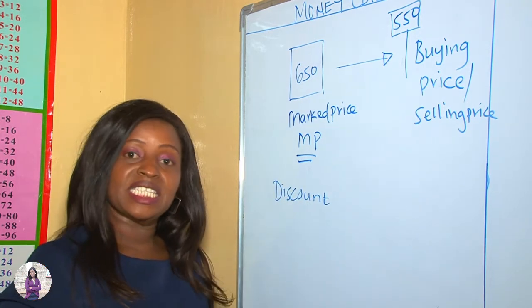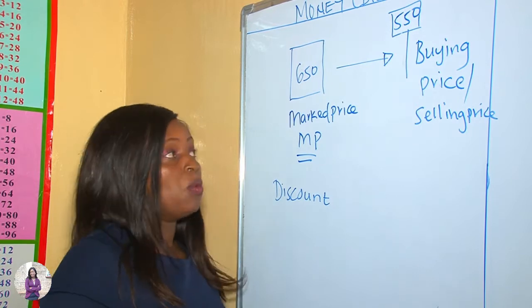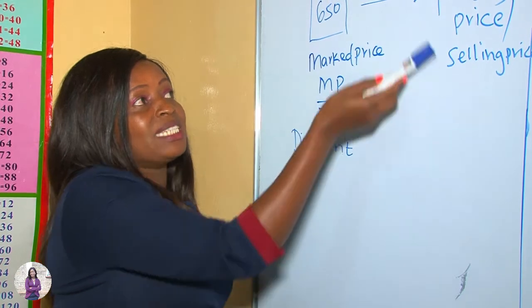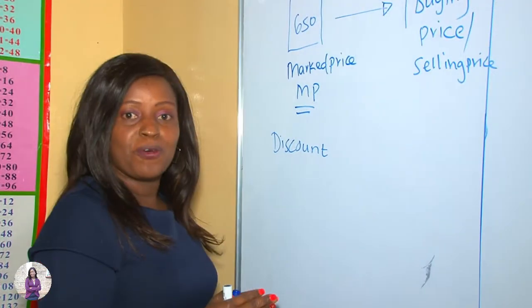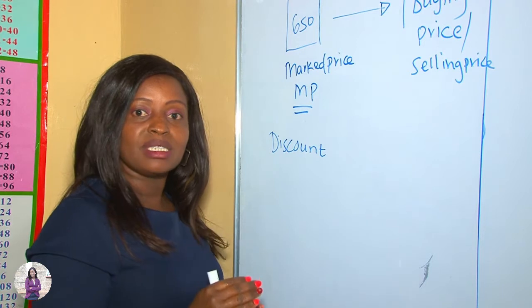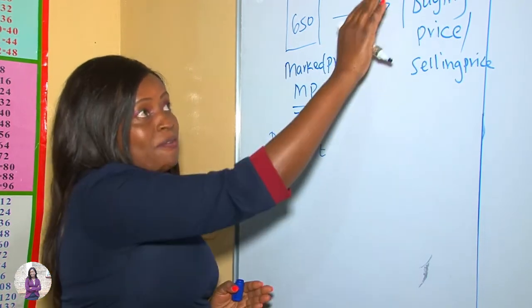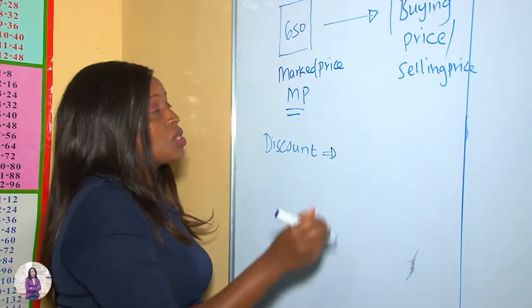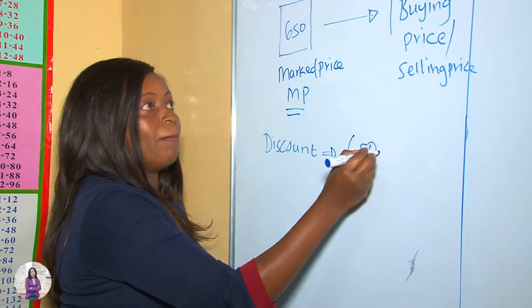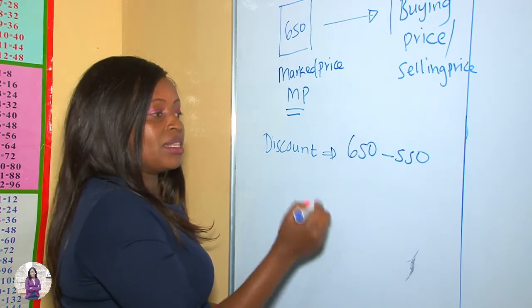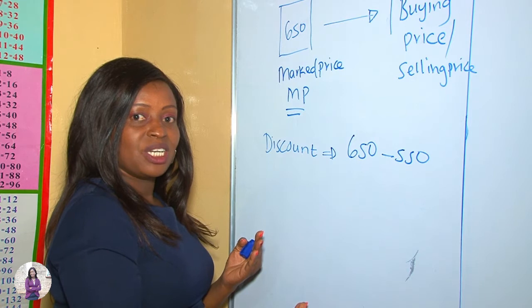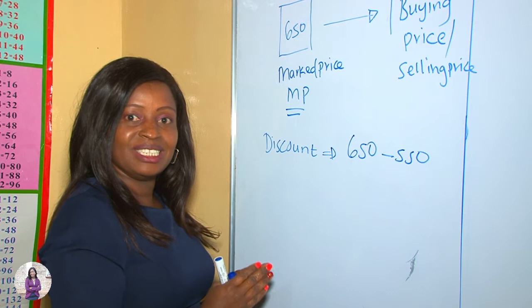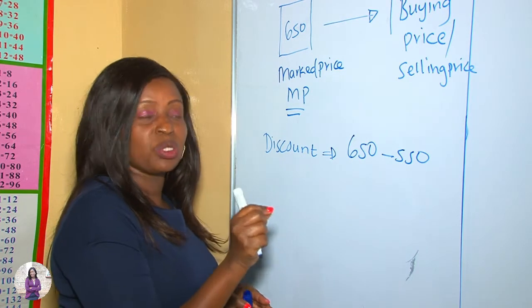Instead of buying the item at the original marked price, you now buy it at 550 — a lesser price. The amount has been reduced to 550. Initially it was 650 but now it's 550, so you have been given a discount. You are buying the commodity at a lesser price by 100, and that 100 is what we call the discount.